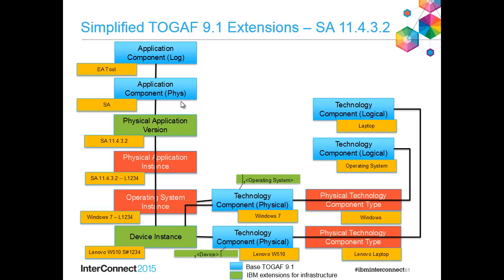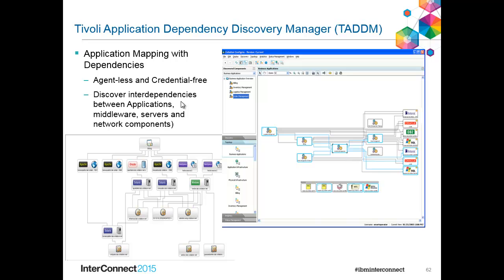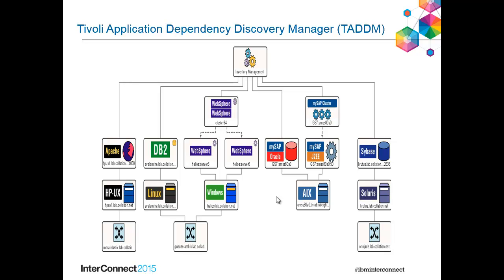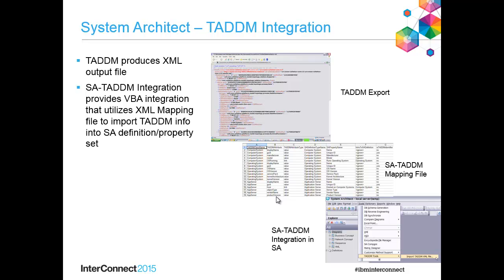This approach rhymes well with bringing in information from Tivoli TADDM — the Tivoli Application Dependency Discovery Manager — and you can use this with other CMDB tools as well. Tivoli TADDM sniffs the network, brings in information agentlessly and credential-free, and discovers interdependencies between applications, middleware servers, and network components. Our integration takes the XML out of Tivoli TADDM, maps it into a property set in System Architect, and you can do this on a regular basis so that you know what's happening in the organization and map that into the enterprise architecture.